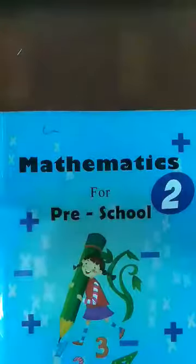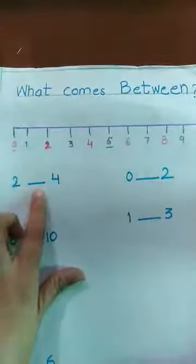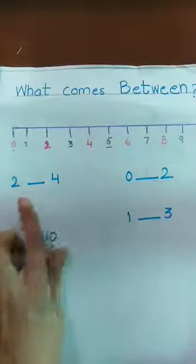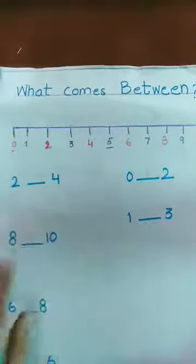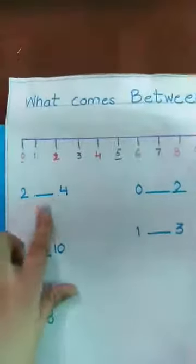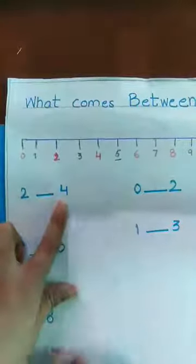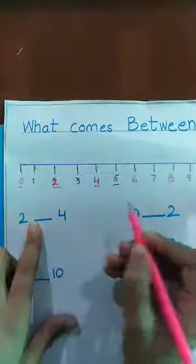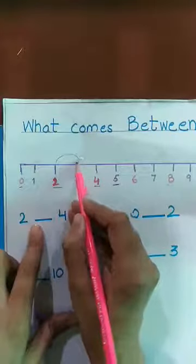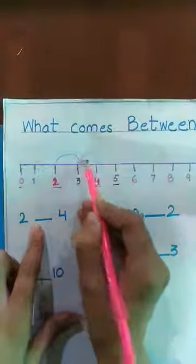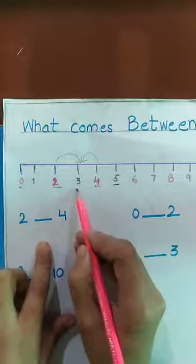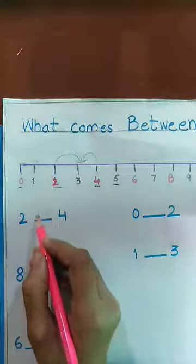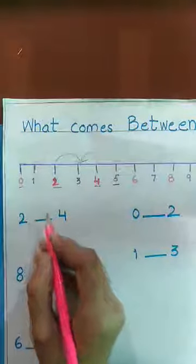Isi tarah humare paas hai between. Kya hai humare paas? Between. What comes between? Ab yeh lines dekho — yeh darmiyan mein likhi hoi hain na. Toh humne kya karna hai? In dono ke darmiyan ka number dekhna hai. Two and four ki darmiyan ka number dekhna hai. This is two and this is four. In dono ka between number koun sa hai? What comes between two and four? Three. Toh yahan par kya aayega? Three.